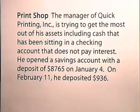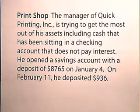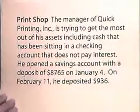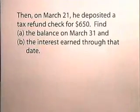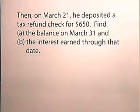The manager of Quick Printing Incorporated is trying to get the most out of his assets, including cash that has been sitting in a checking account that does not pay interest. He opened a savings account with a deposit of $8,765 on January 4th. On February 11th, he deposited $936. Then on March 21st, he deposited a tax refund check for $650. Find the balance on March 31st and the interest earned through that date if the account earns 3.5% compounded daily.